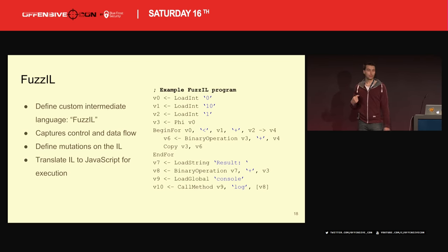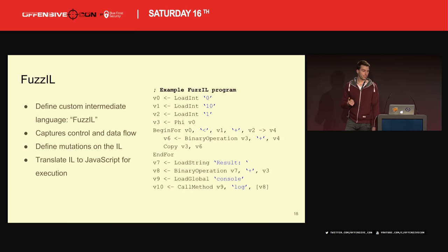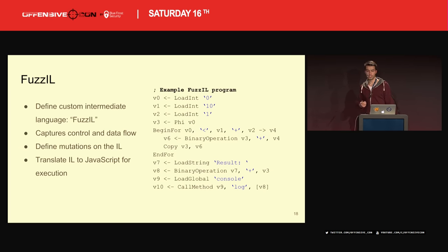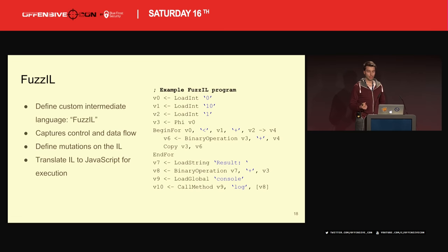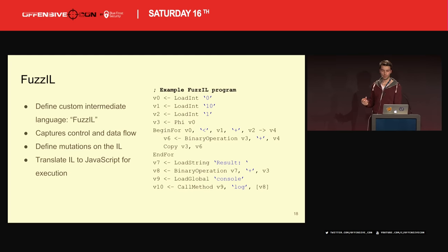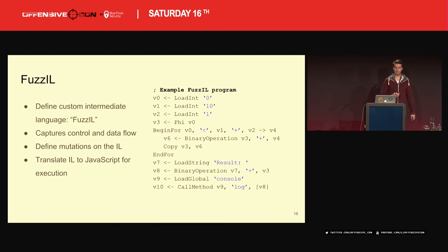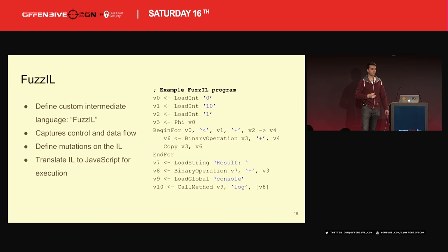If you want to fuzz or mutate bytecode, you can either pick an existing bytecode or make your own. I made my own — I called it Fuzz IL, because it sounds cool. It's an intermediate language optimized for fuzzing that looks kind of like bytecode but is easy to mutate. It has registers or variables v0, v1, and so on. Each instruction has an operation like load int, begin for, or binary operation, and can have parameters — for example, load int with parameter zero loads the value zero into v0. The JavaScript engine doesn't understand Fuzz IL directly, so we first have to translate it into JavaScript — a process called lifting.